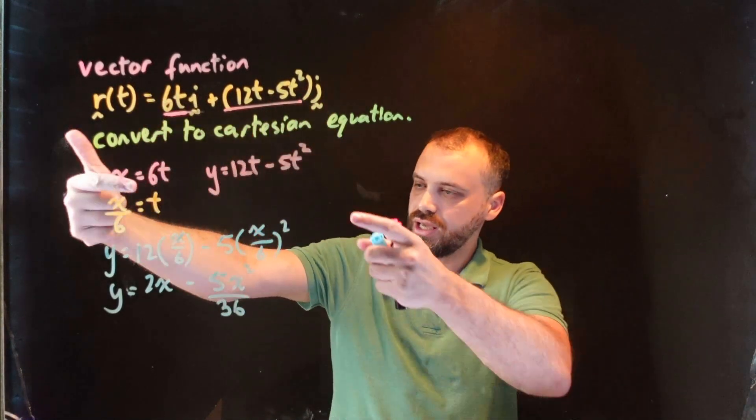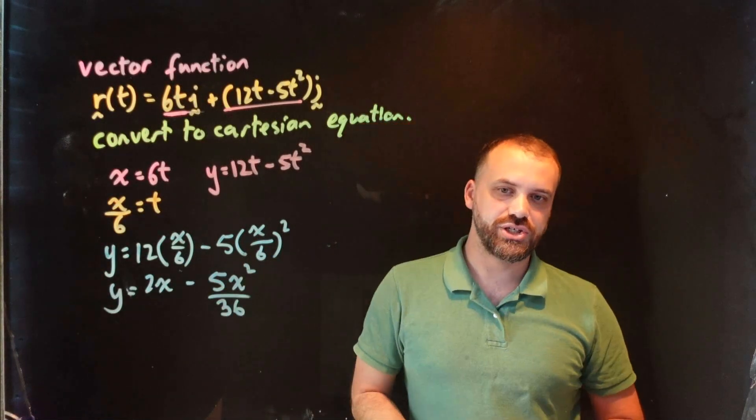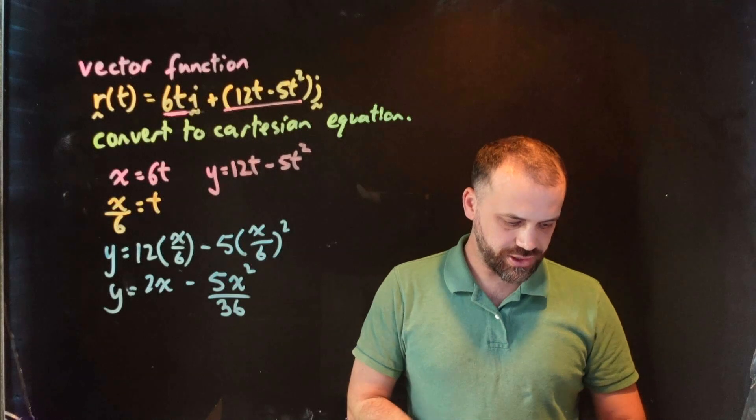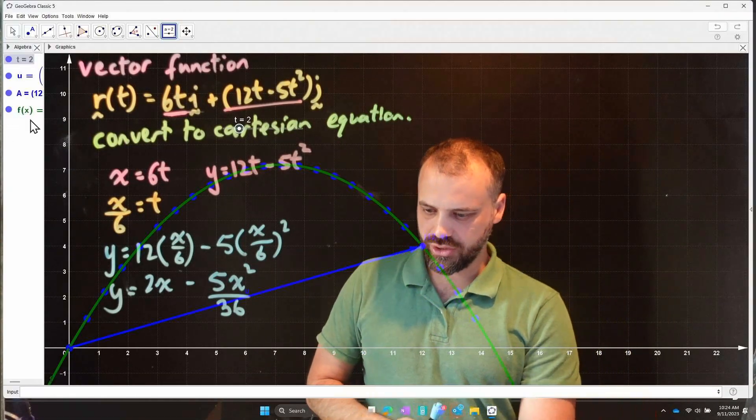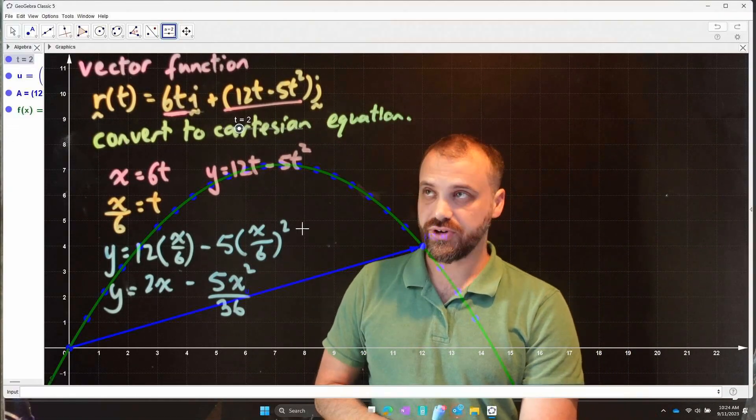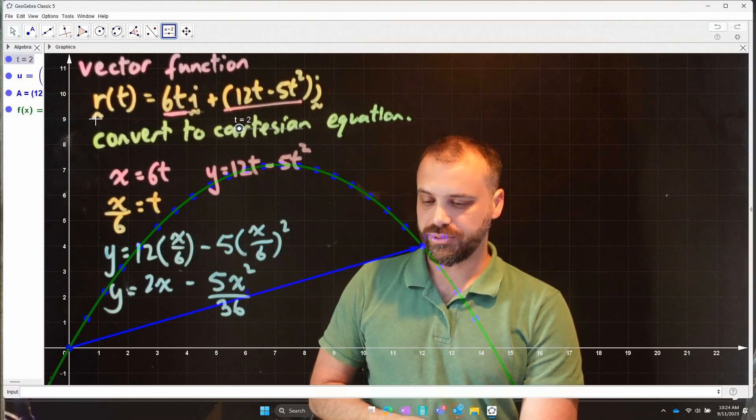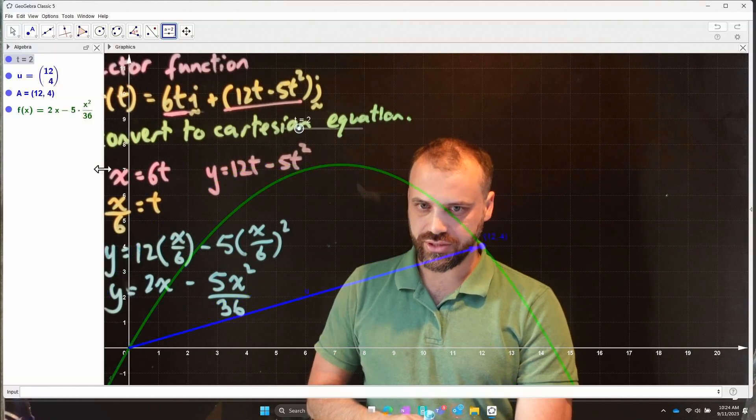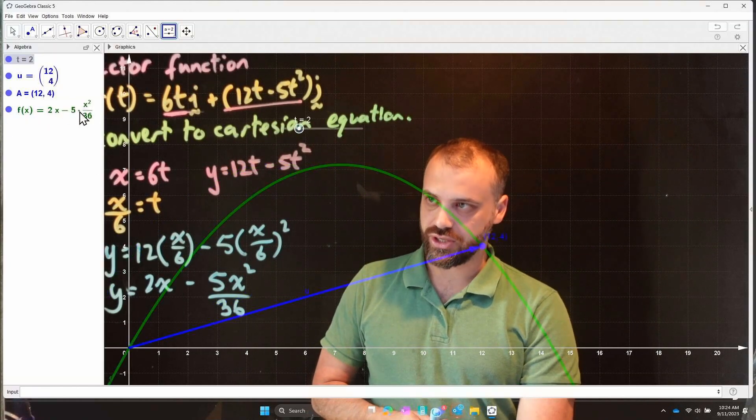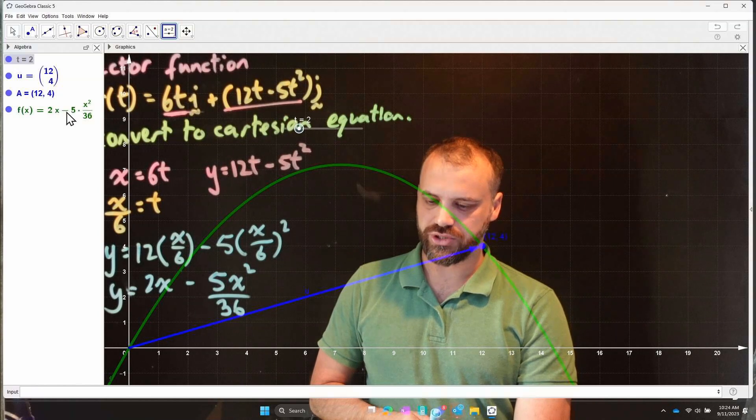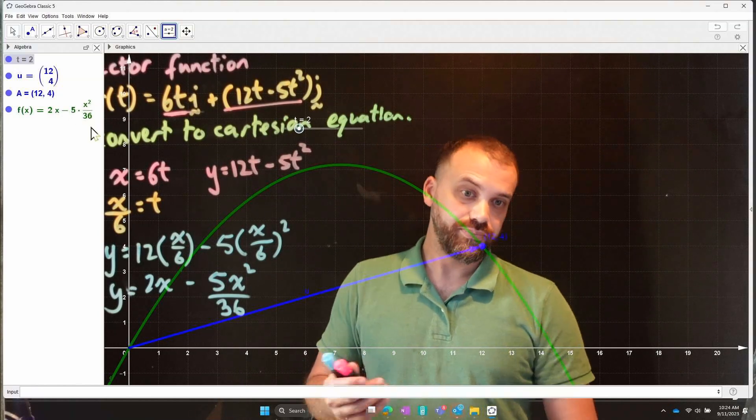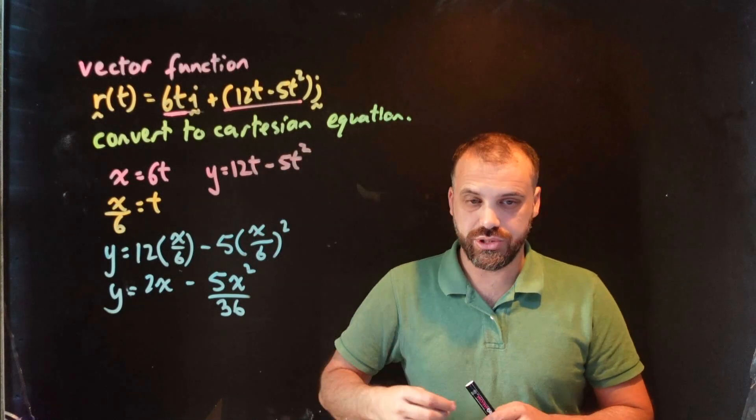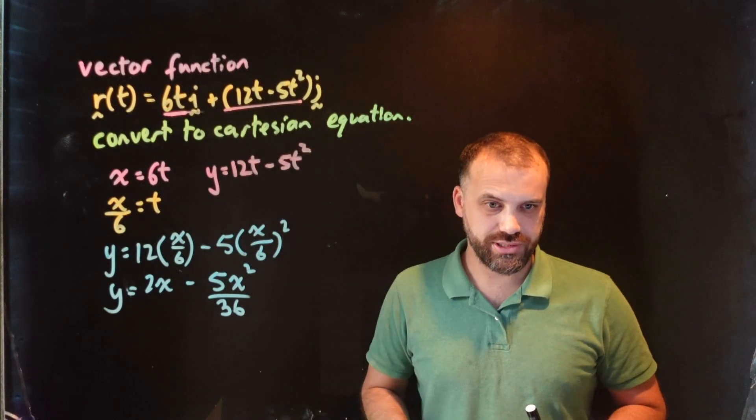We've converted this vector function into a Cartesian equation. Beautiful. That's how it's done. Perfect. If you look at our equations, we had a vector function which was 6ti plus 12t minus 5t squared. Okay. And we've been able to convert it to this equation right here. 2x minus 5 times x squared on 36. Now, one last thing I'll mention about these sorts of questions is we might be able to add a little bit extra to this.